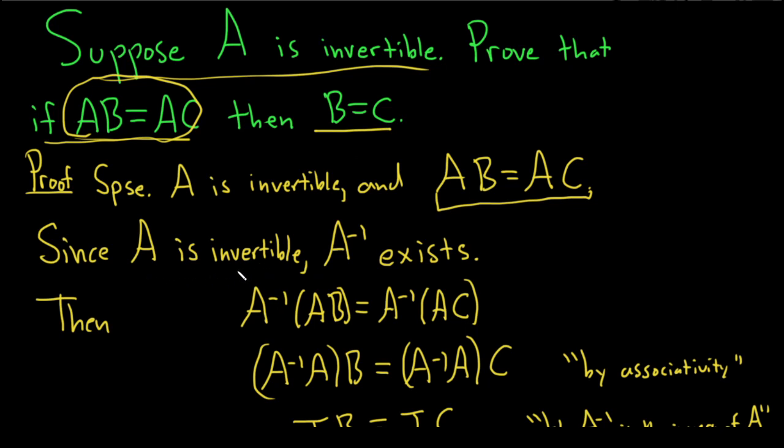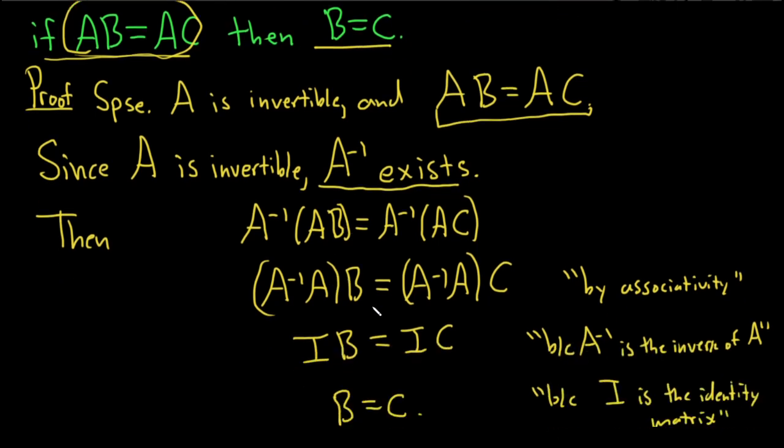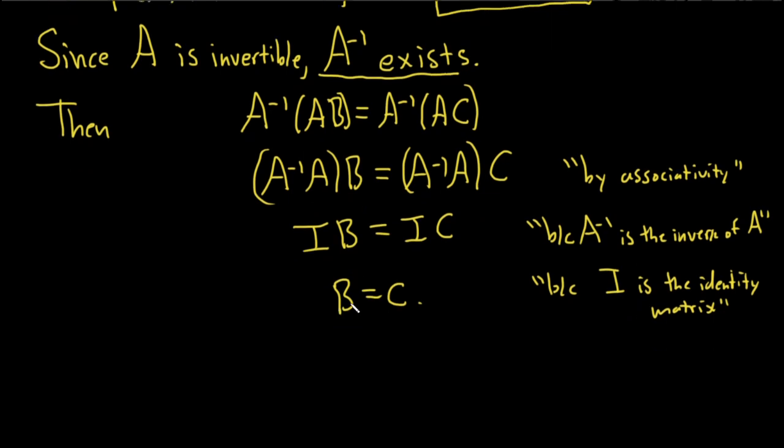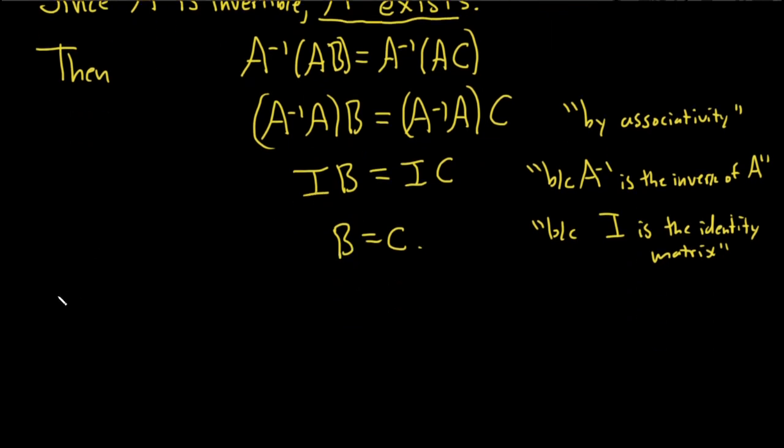So you write down what it means for A to be invertible. It means that this exists. And then basically you have to show B equals C. So you have to get rid of the A. So the natural thing to do is to multiply by A inverse on the left. Make sure to use associativity and use the fact that A inverse is the inverse of A and that I is the identity. This completes the proof.